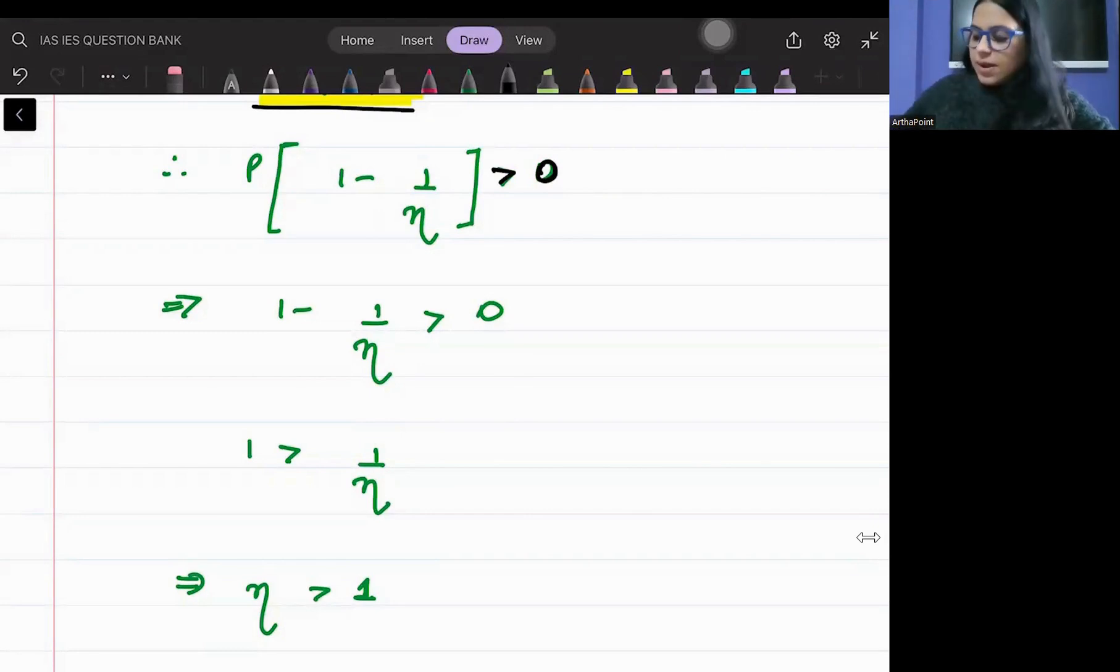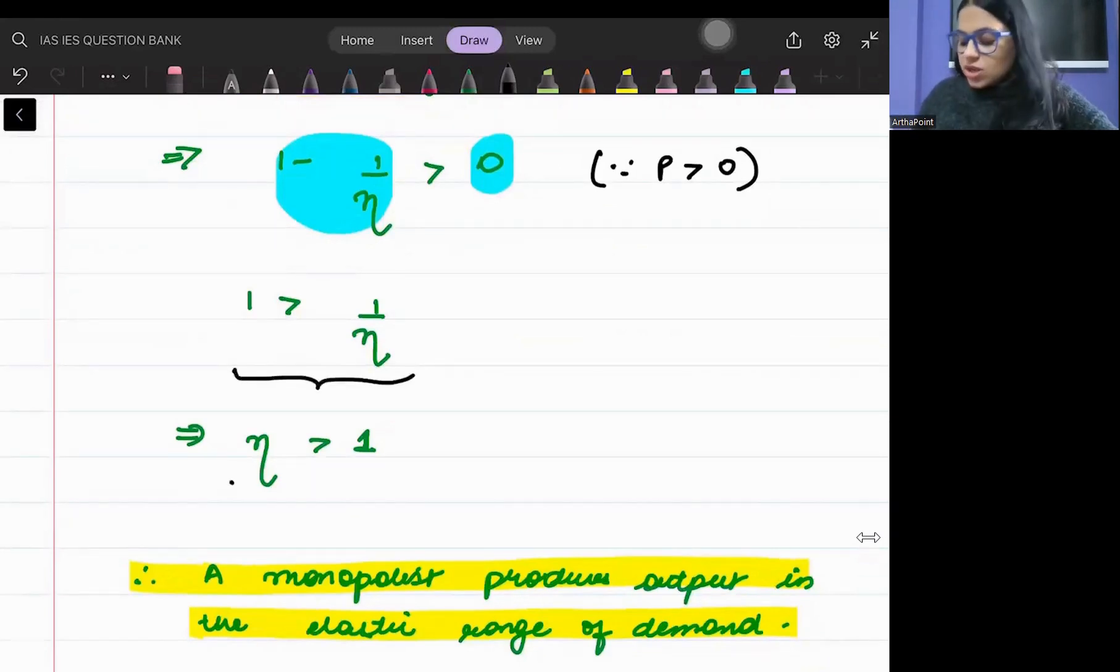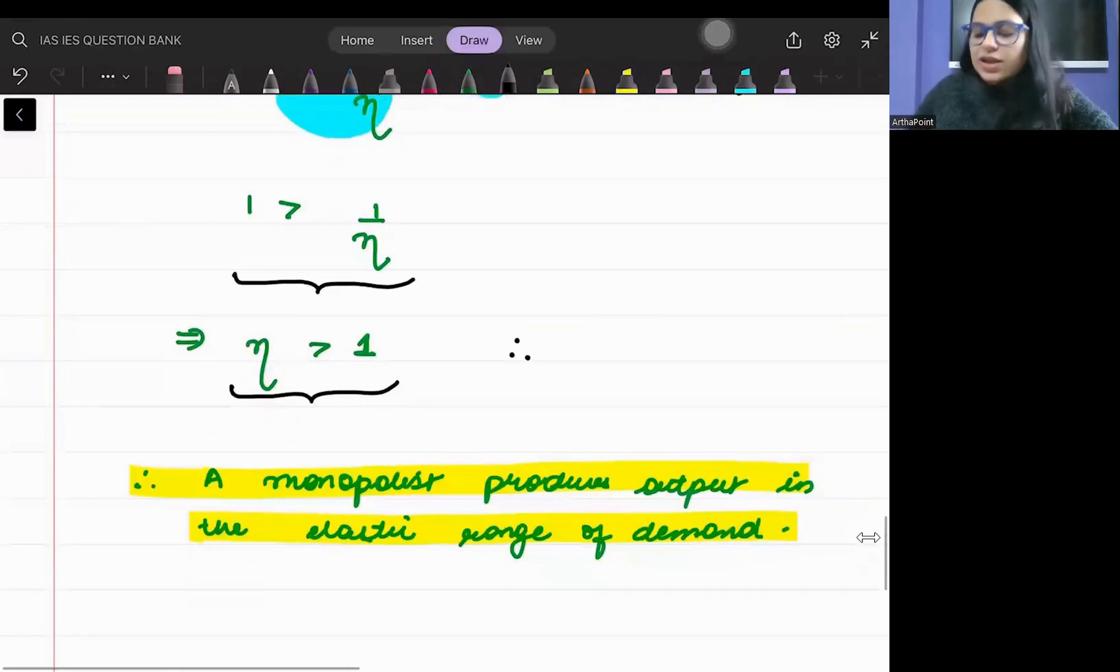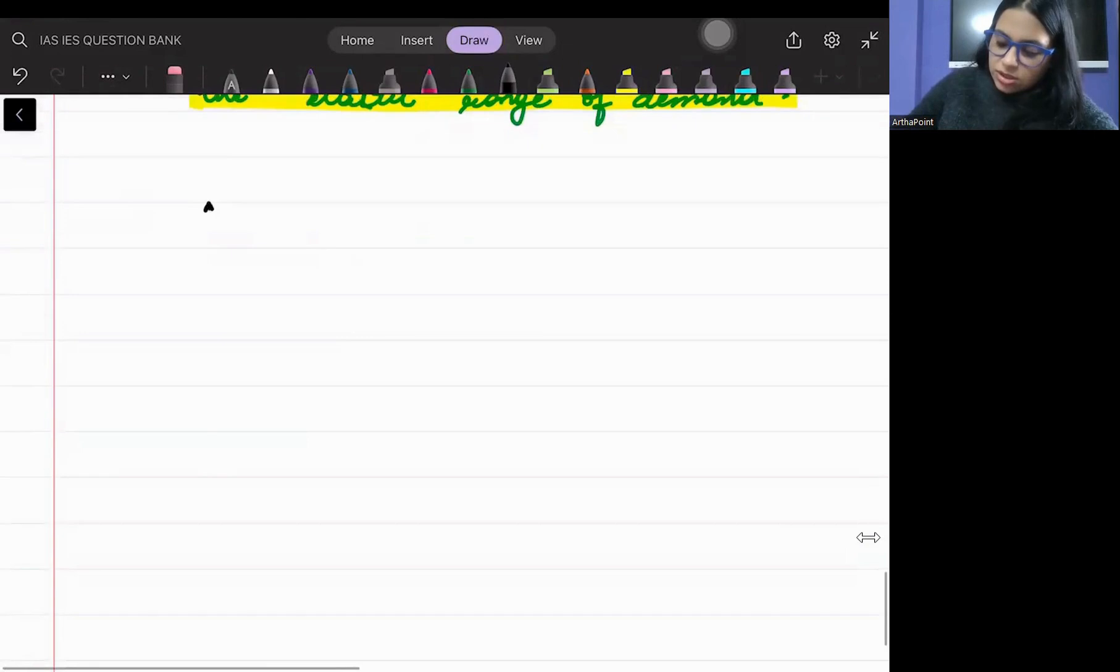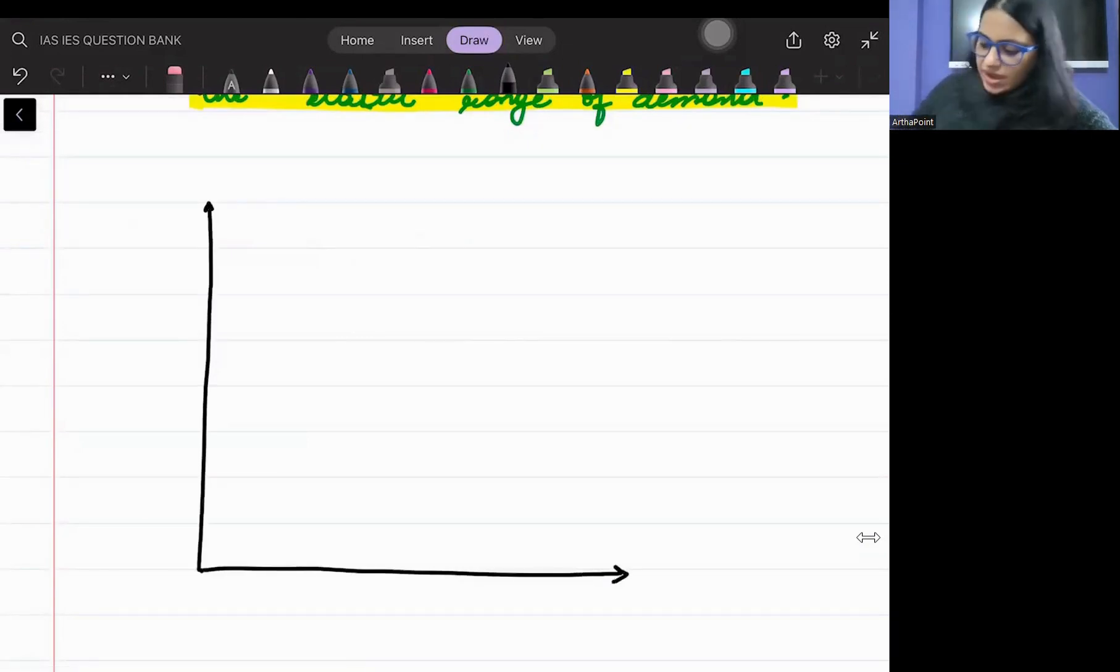When product of two things is positive, either both are positive or both are negative. But price cannot be negative. Price is positive. So the other number must also be positive. This implies that (1 minus 1 by elasticity) will be positive since your price is also positive. From here, one is greater than one by elasticity. So elasticity is greater than one. In absolute value, elasticity should be greater than one. That means it should be operating in the elastic region.